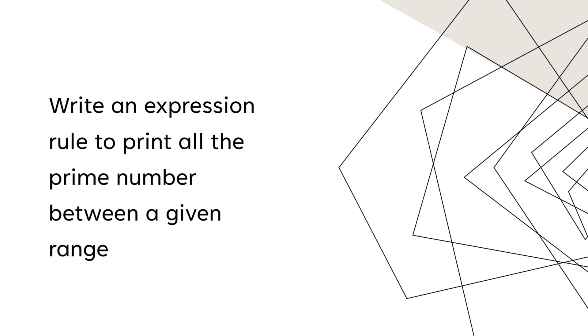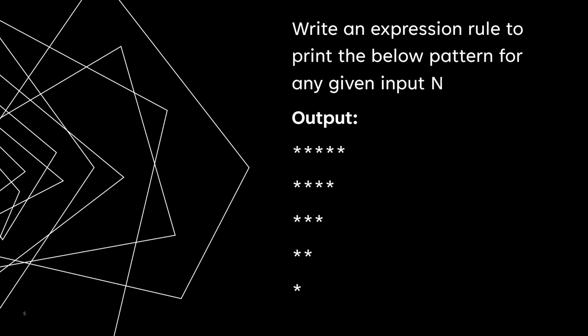Our next question involves a star pattern — you might feel nostalgic about these from your programming days in Python, Java, or any other language. These patterns can also be achieved in Appian. We need to write an expression rule to print a pattern for any given input n. For n equals 5, the output is 5 stars in the first row, 4 stars in the next row, 3 stars after that — in descending order.